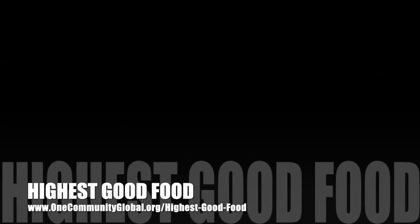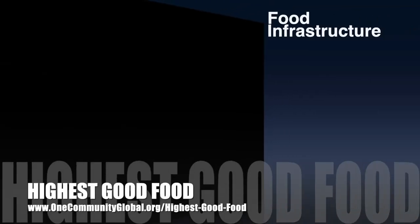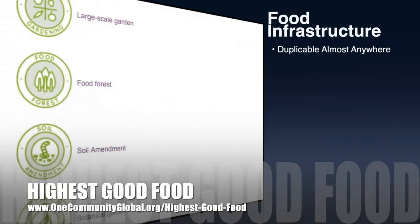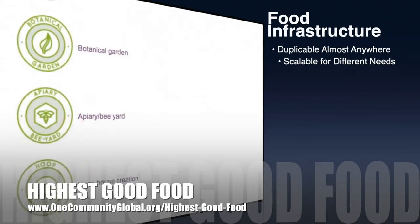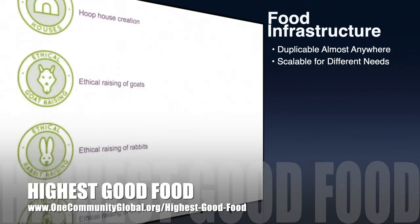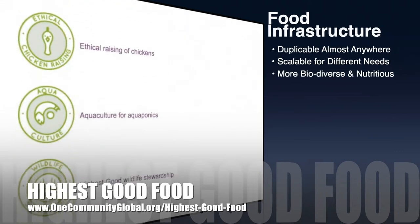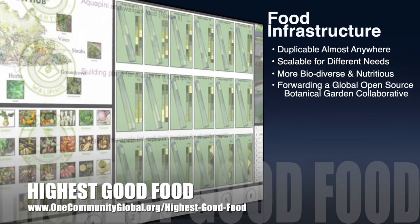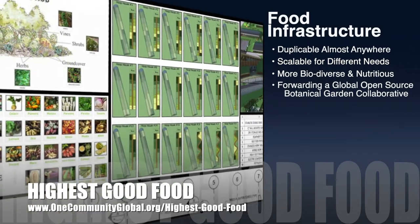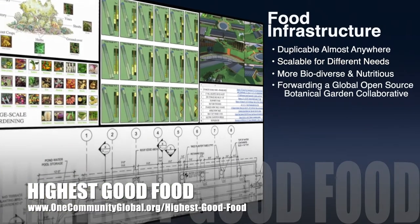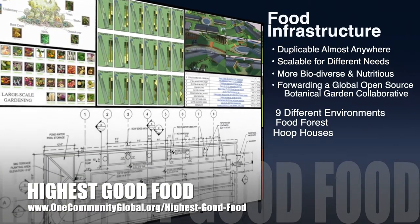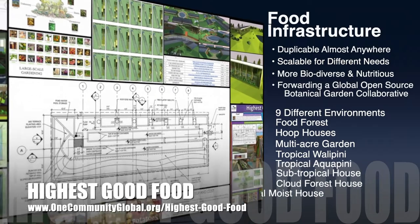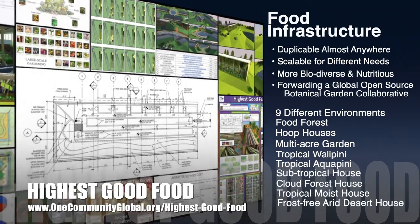One Community's approach to Highest Good Food is duplicable almost anywhere, scalable for different needs, more biodiverse and nutritious, part of forwarding a global open source botanical garden collaborative, and includes nine different free shared and duplicable growing environments.